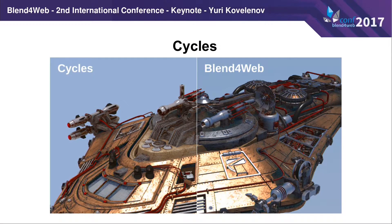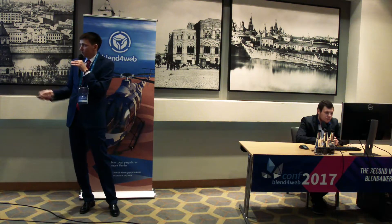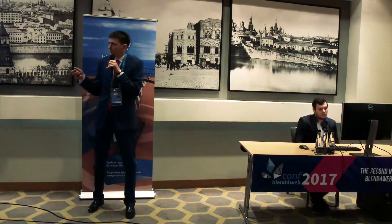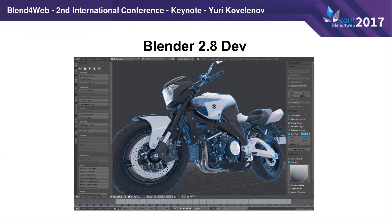Cycles is a non-real-time renderer available in Blender, intended for creating movies and still images. But now it is possible to bring content created for movies to web browsers — that's what we are working on. This year, a new version of the technology, WebGL 2, appeared, which offers much more features and works faster. We are already supporting WebGL 2. We are also participating in the development of Blender itself. Blender is developed by Blender Institute, located in Amsterdam. Pablo will speak about it a bit later.